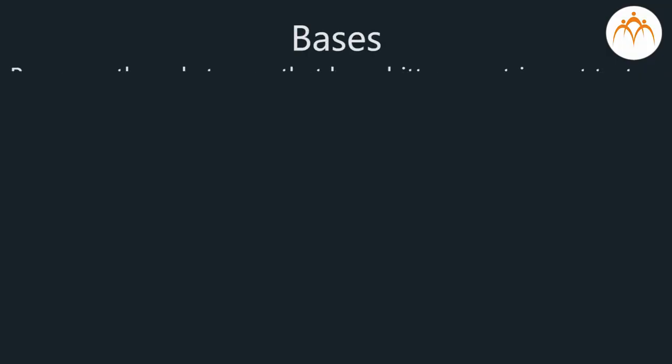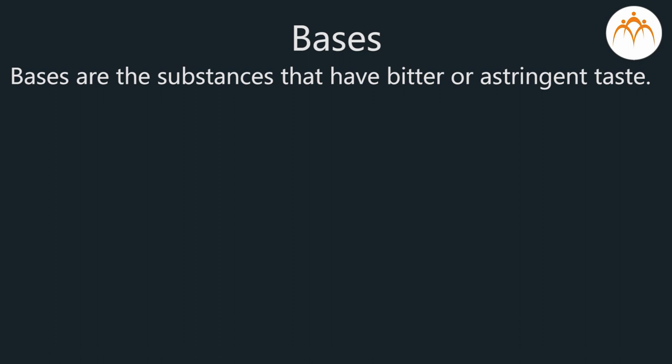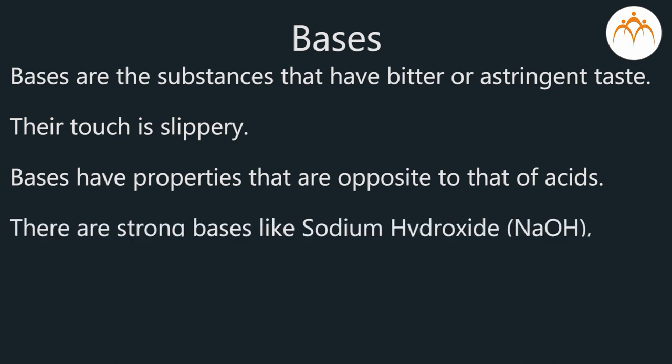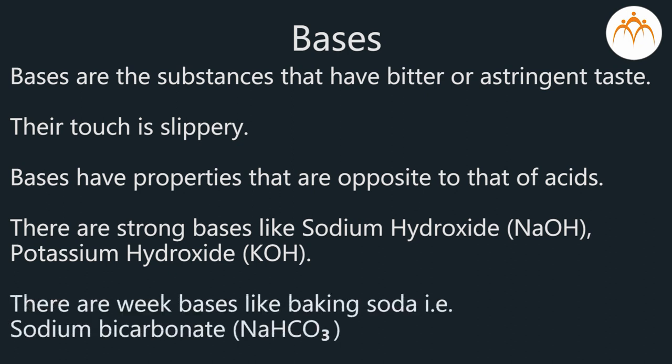Let's revise. Bases: Bases are the substances that have bitter or astringent taste. The touch is slippery. Bases have properties that are opposite to that of acids. There are strong bases like sodium hydroxide NaOH, potassium hydroxide KOH. There are weak bases like baking soda, that is sodium bicarbonate Na2CO3.